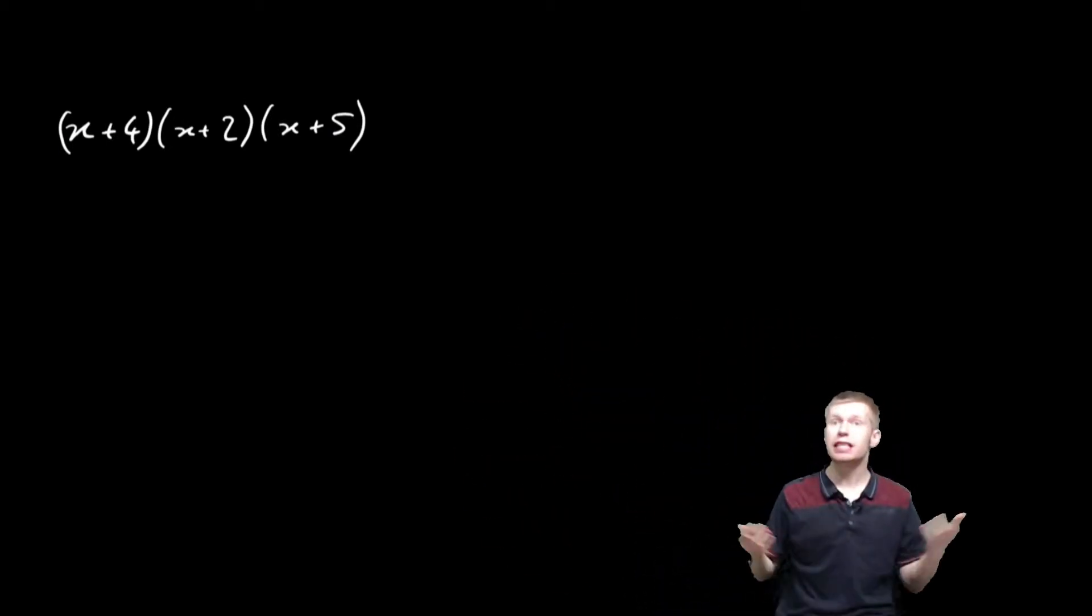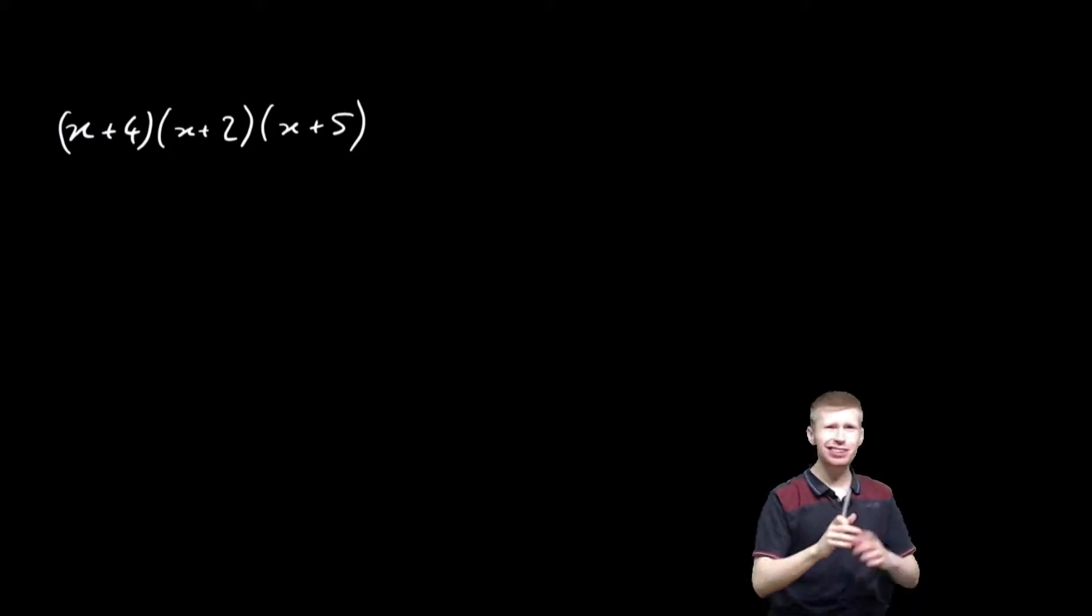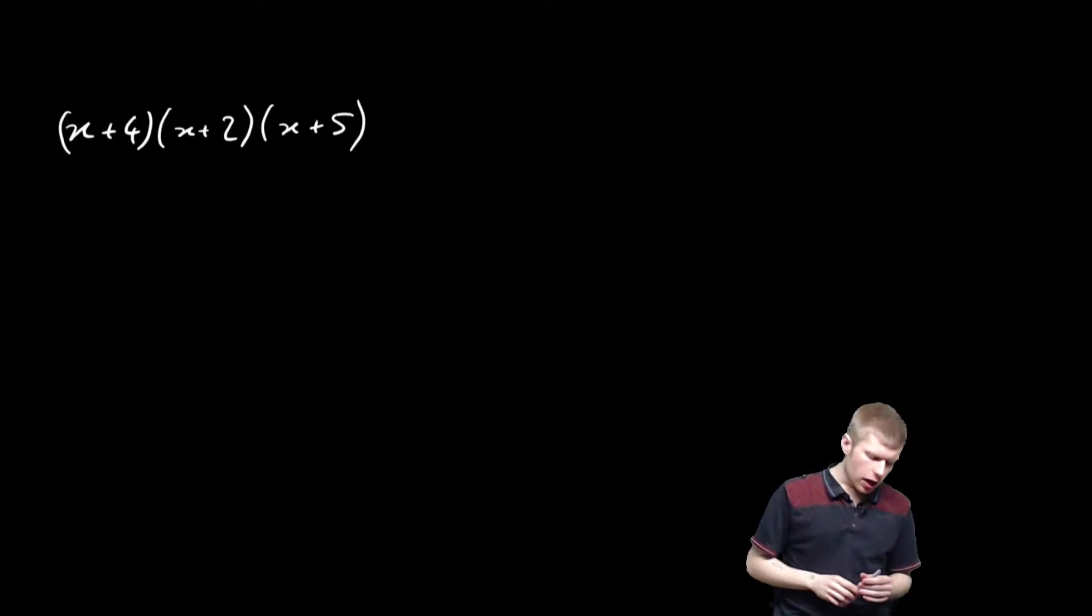So let's try and expand this thing out and see how it actually works. So, (x+4) times (x+2) times (x+5). Now if this was two brackets, I could do that. I'm a pro at that, that's a quadratic, I've been doing it for ages. But it's not, it's three. But that's fine, all I'm going to do is just leave one of them alone.